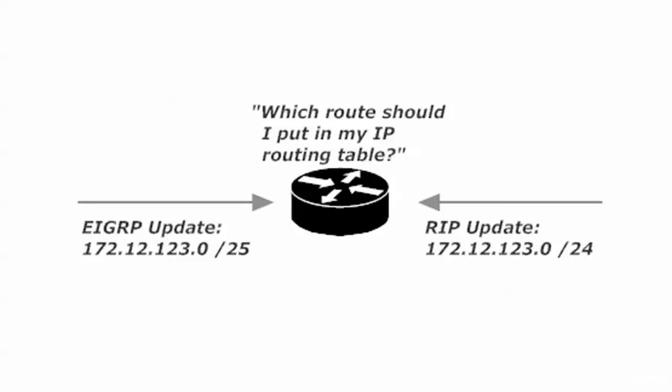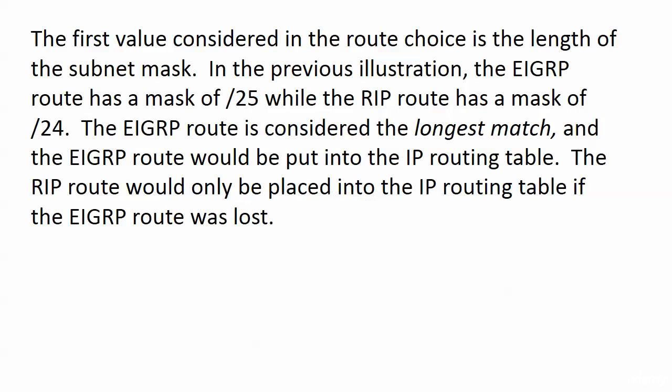In this case, administrative distance does not matter, because the first value considered in this route choice is the length of the subnet mask. In that previous illustration, the EIGRP route had a mask of slash 25, while the RIP route has a mask of slash 24. This is what we call the longest match. That EIGRP mask is going to match the first 25 bits; RIP is matching 24, so EIGRP is considered the longest match, and the EIGRP route would be put into the IP routing table.